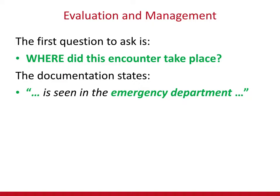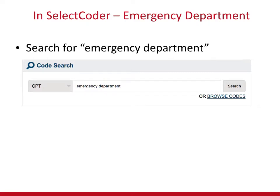So we go back to SelectCoder. In SelectCoder, you make sure your search bar is set to CPT, and you're going to type in 'emergency department.' Now, that sounds weird because that's a location in the hospital and not a procedure per se, but this is how many — not all, but many — of the evaluation and management codes are determined first by the location where the doctor cared for the patient. You could type anything into SelectCoder; it doesn't cost you anything extra. Let's see what we get.